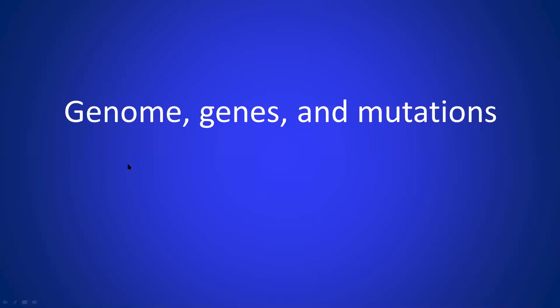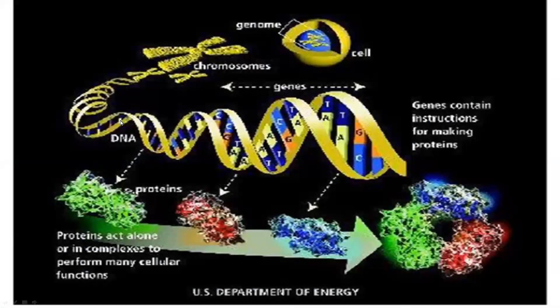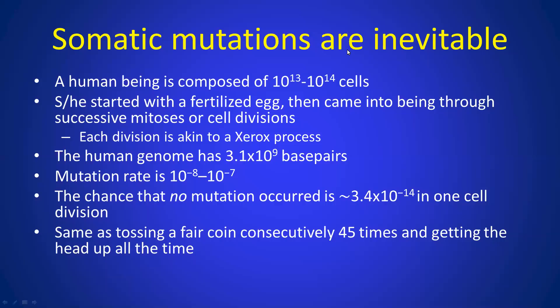To understand mutation, we have to understand the genome. The genome essentially consists of 23 pairs of chromosomes plus about 1% mitochondrial genome — 3.1 billion base pairs in totality. All human beings started with a fertilized egg, but are composed of 10 to the power of 13 to 14 cells, arising from successive cell divisions. Each cell division is akin to a Xerox process. Although replication has high fidelity, the mutation rate is very low, but the chance of no mutation occurring in one cell division is extremely low.